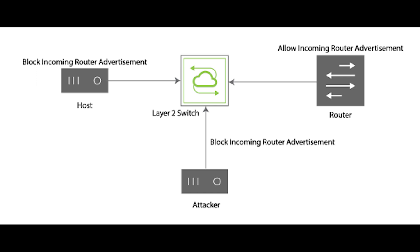Router advertisements are used by devices to announce themselves on the link. The IPv6 RA guard feature analyzes these RAs and filters out the RAs sent by unauthorized devices. In host mode, all RA and router redirect messages are not allowed on the port. The RA guard feature compares configuration information on the Layer 2 device with the information found in the received RA frame.